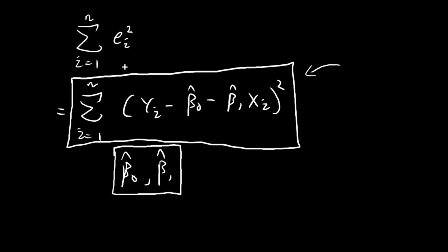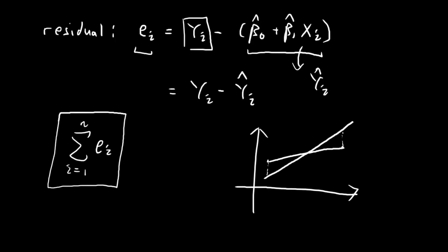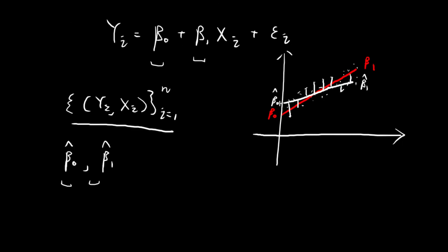We want to find estimates of beta0 and beta1 that minimize the sum of the residual squares. Once we minimize the sum of the residual squares, the straight line we get will represent a best fit — a line with the least deviation from all the data points.